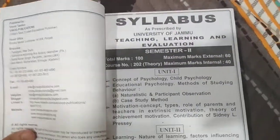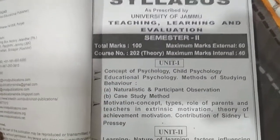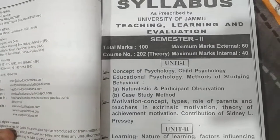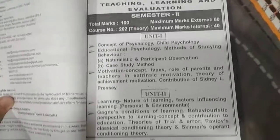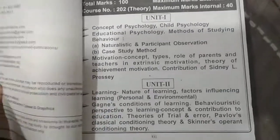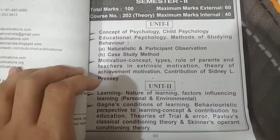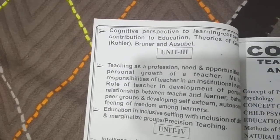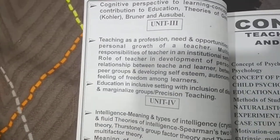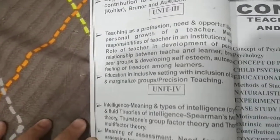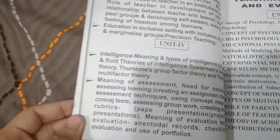Let's come to the syllabus first and check this book. Unit 1 mentions Concept of Psychology, Child Psychology, Educational Psychology, then Motivation Concept. Unit 2 covers Learning, Nature of Learning, Gangster Condition of Learning, then Cognitive Perspective to Learning. Unit 3 is Teaching as a Profession, Need and Opportunities, Inclusive Education and Inclusive Setting. Unit 4 covers Intelligence and Meaning of Assessment. So the syllabus is first mentioned there.